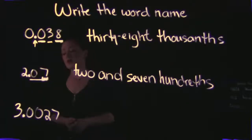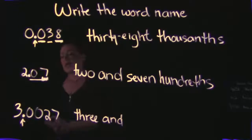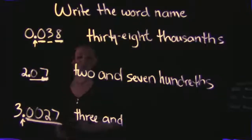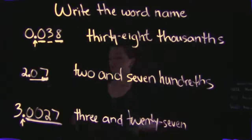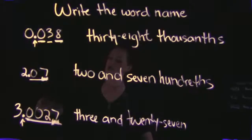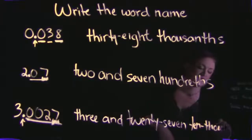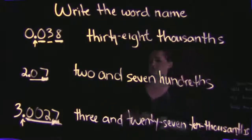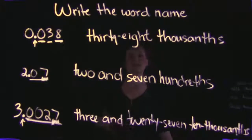Our last example: we do have a number to the left of the decimal, which is 3. When we get to the decimal point, we insert the word 'and,' giving us '3 and.' To the right of the decimal we have the number 27, so '3 and 27.' We end with the rightmost place value — the rightmost number is 7, and counting the places: tenths, hundredths, thousandths, ten thousandths — the 7 is in the ten thousandths spot. So 3.0027 is 3 and 27 ten thousandths. That's how you take a decimal and write its word name.